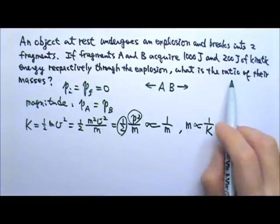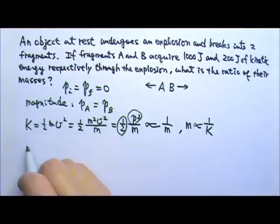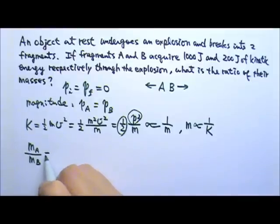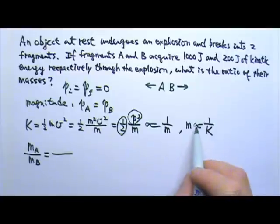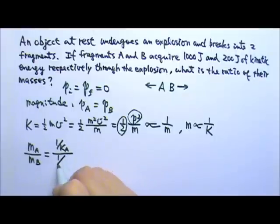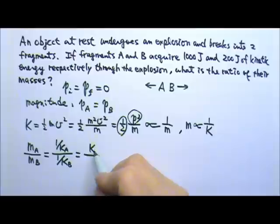We need to find the ratio of their masses. The ratio m_A/m_B is proportional to 1/K, which is (1/K_A)/(1/K_B), or K_B/K_A, because they're inversely related.